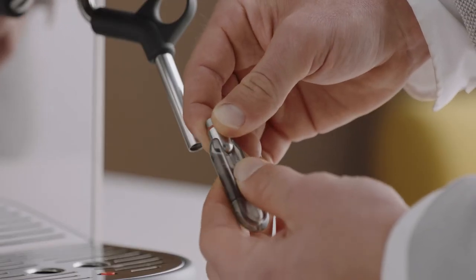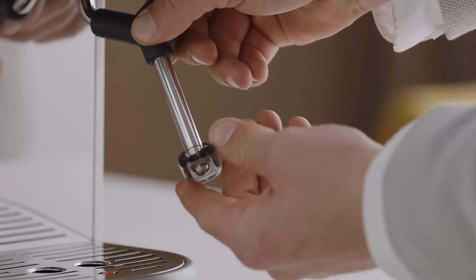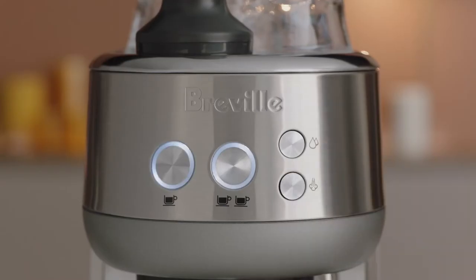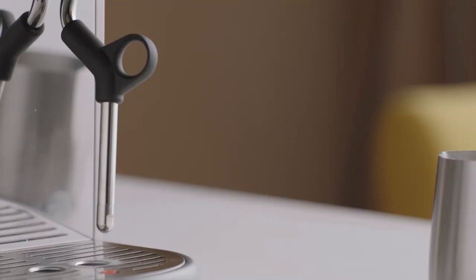Then use the tool to unblock the holes. Screw the tip back onto the steam wand after rinsing. Then press the steam button to purge the steam wand after cleaning.